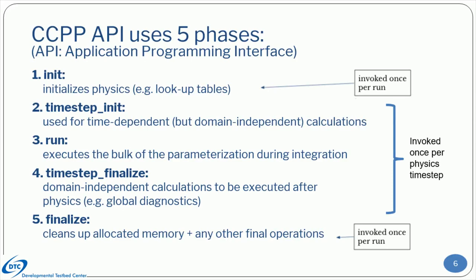CCPP compliant parametrizations can have up to five phases through the application programming interface. The init phase initializes physics and is invoked once per run. Correspondingly, the finalize phase cleans up allocated memory, and is also invoked once per run. The phases time step init and time step finalize are used for time-dependent but domain-independent calculations, such as global diagnostics. Together with the run phase, they are invoked once per physics time step.